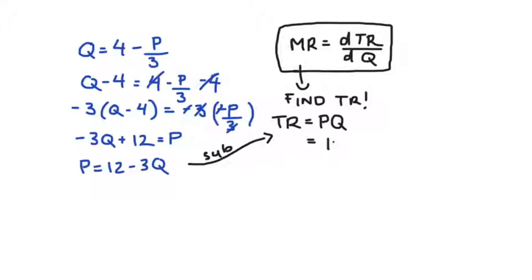So, substituting our demand function for P, we get total revenue is equal to 12 minus 3Q, all multiplied by Q. Just expanding my brackets here, I get 12Q minus 3Q squared.